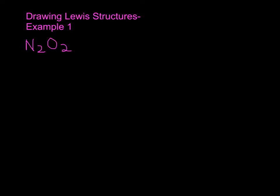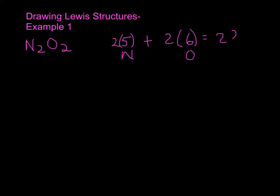Let's go ahead and draw the best Lewis structure for this molecule. The first thing we need to do is add up the valence electrons present in the molecule. From the periodic table, nitrogen has five valence electrons, and there are two of those. We add to that two times six valence electrons for oxygen, giving us 22 valence electrons to work with in this molecule.